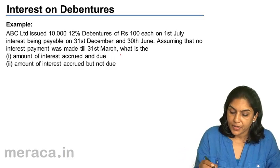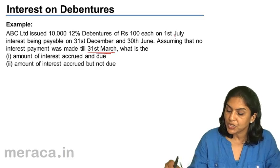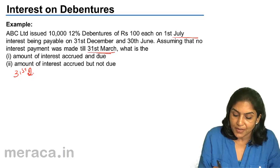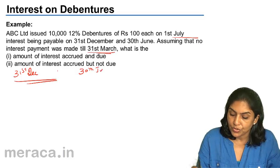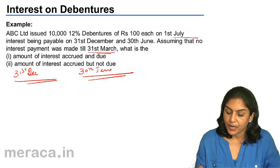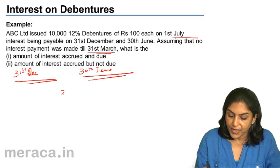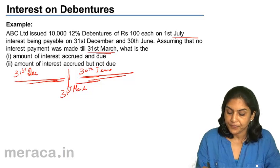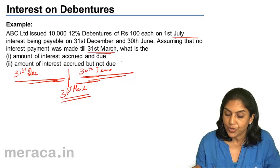This is the same example. No interest payment was made till 31st March. The company issued the debentures on 1st July. So what were the due dates? The due dates for payment of interest are 31st December and the next date would be 30th June. Now the company has not paid any interest. On 31st March, which is in between these two dates, what is the position? What is the amount of interest accrued and due, and what is the amount of interest accrued but not due?